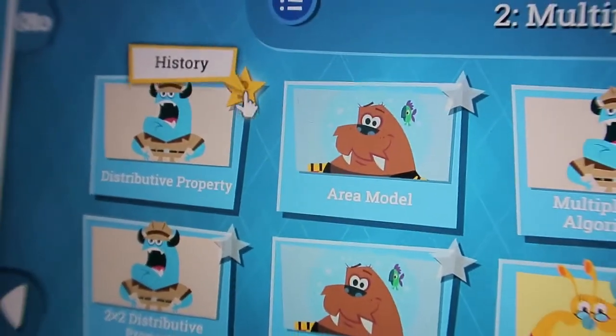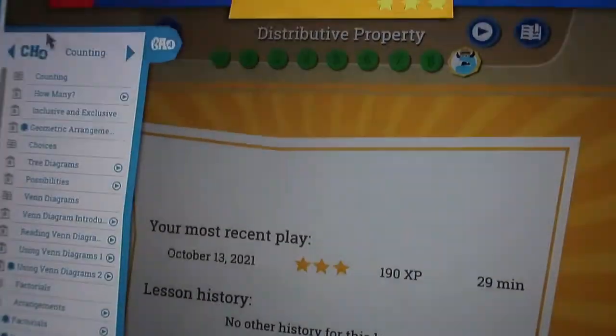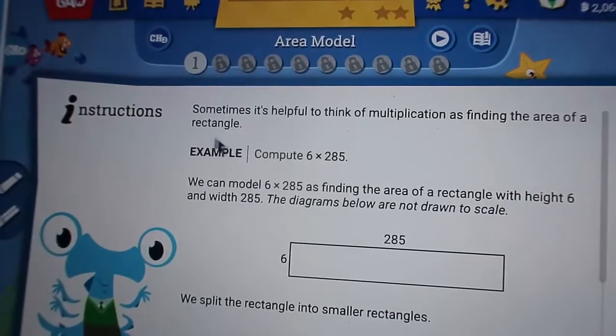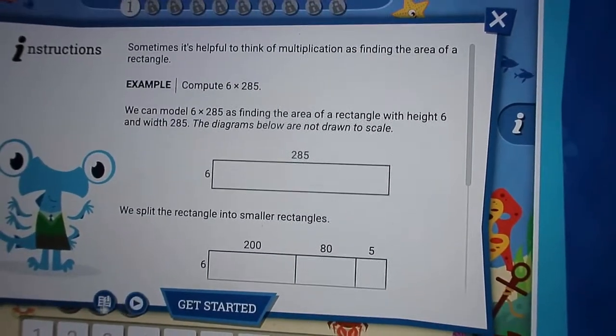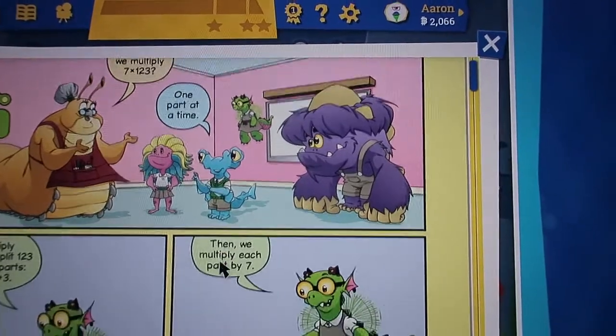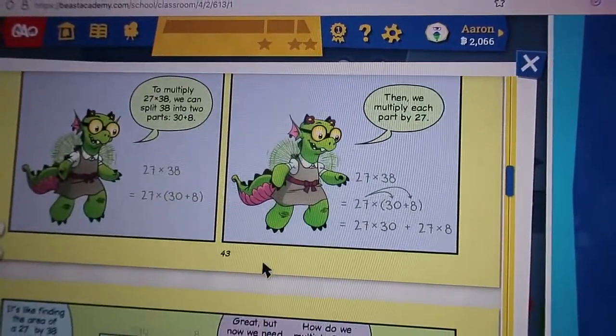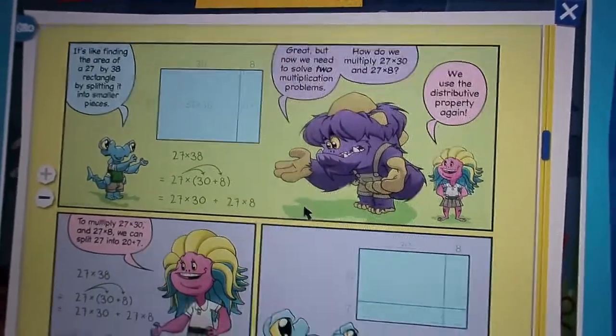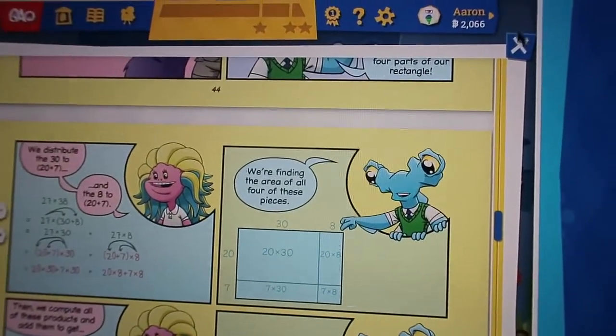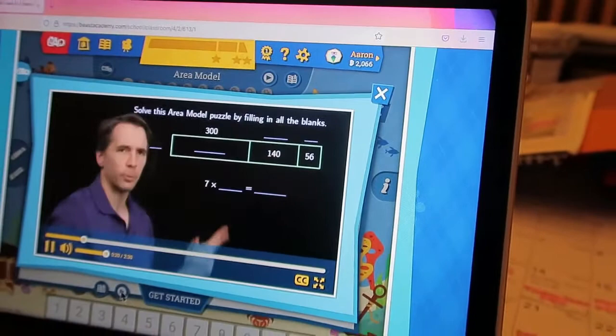Yesterday he did really good on the distributive property, so he got three stars, which means he really understands what he's doing. And then today we're going to do the area model. So his instructions are here. It teaches him what to do. And also if he clicks here, he has a comic that is another way to teach him how to do this. It makes it like a story. See how it's like in the comic book form. And then he also has a video to watch in case he doesn't understand the other parts of it.